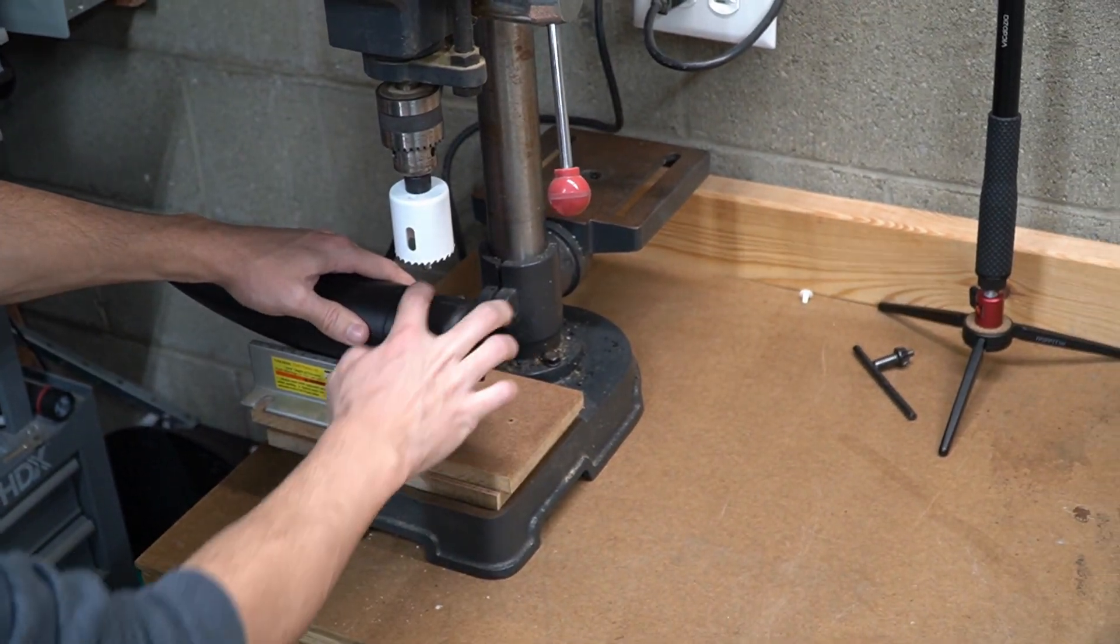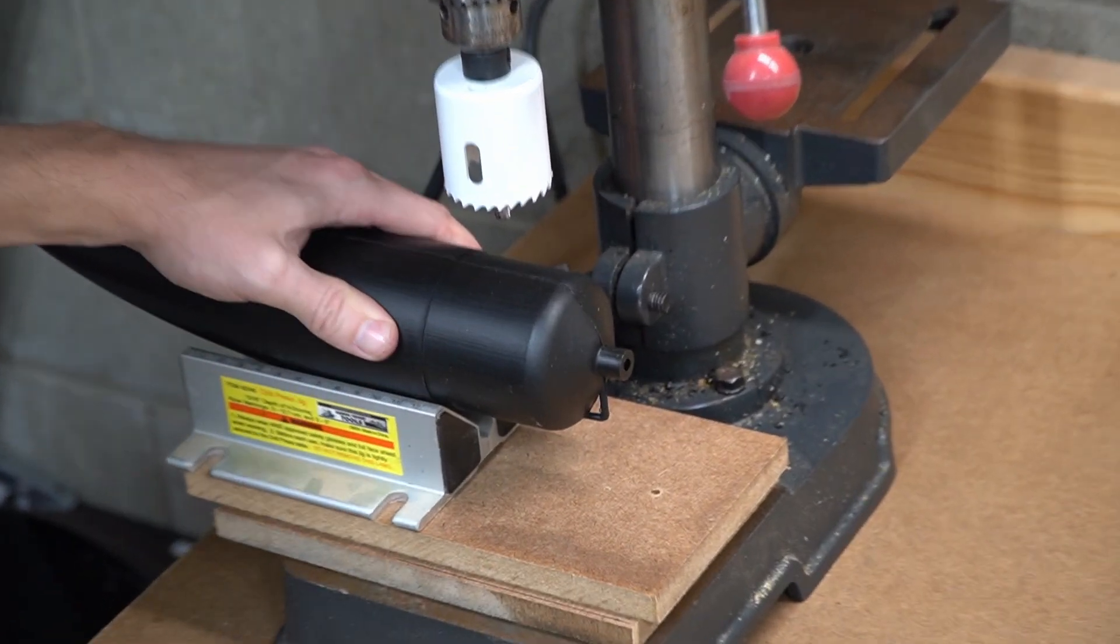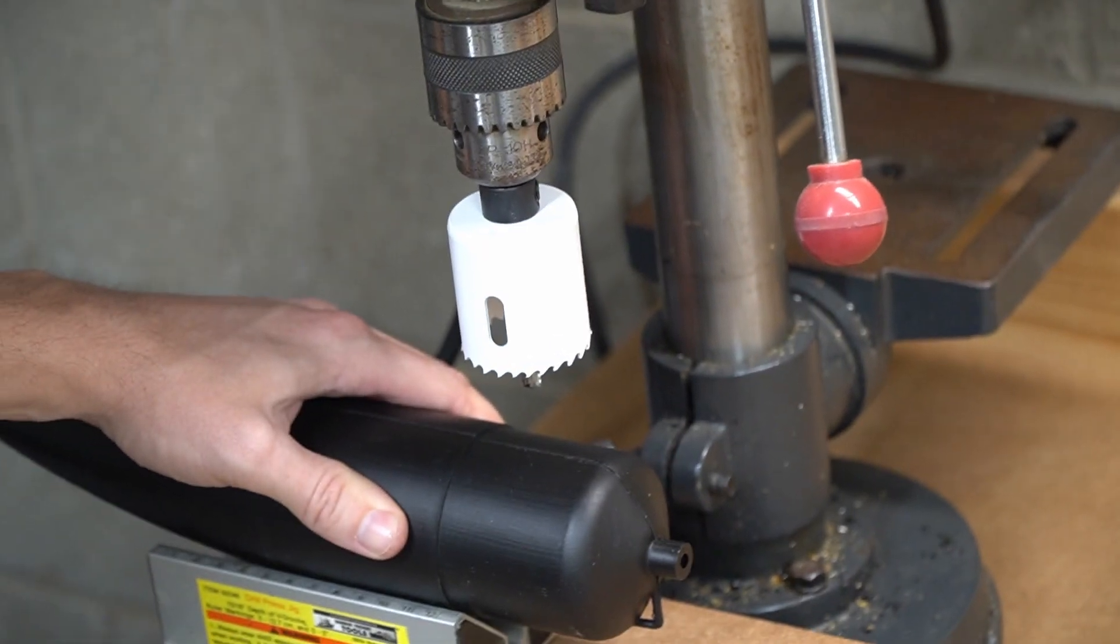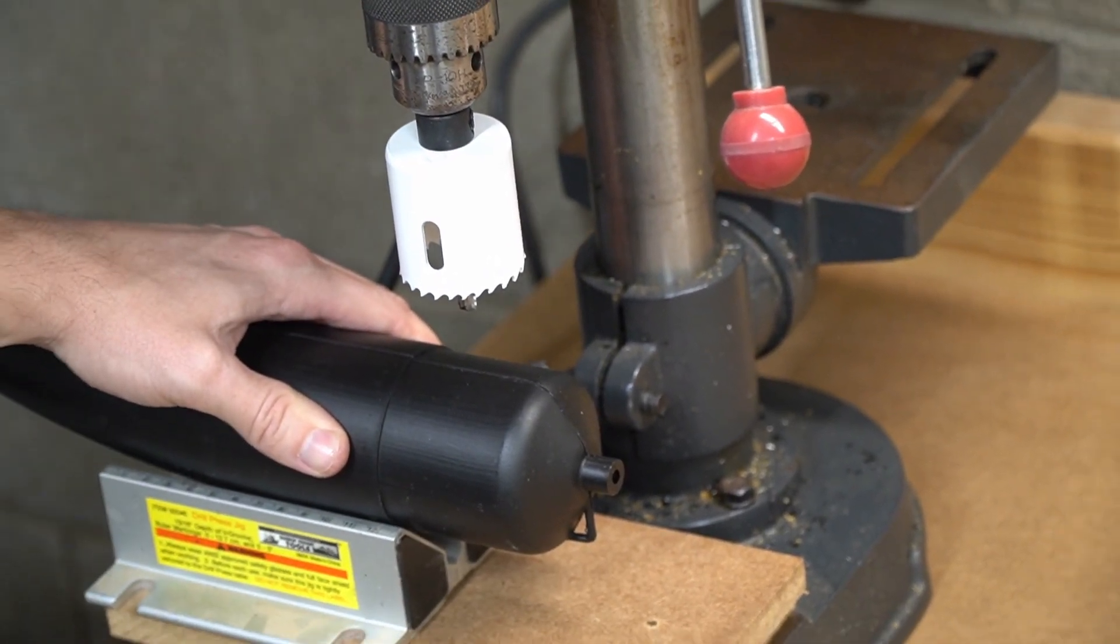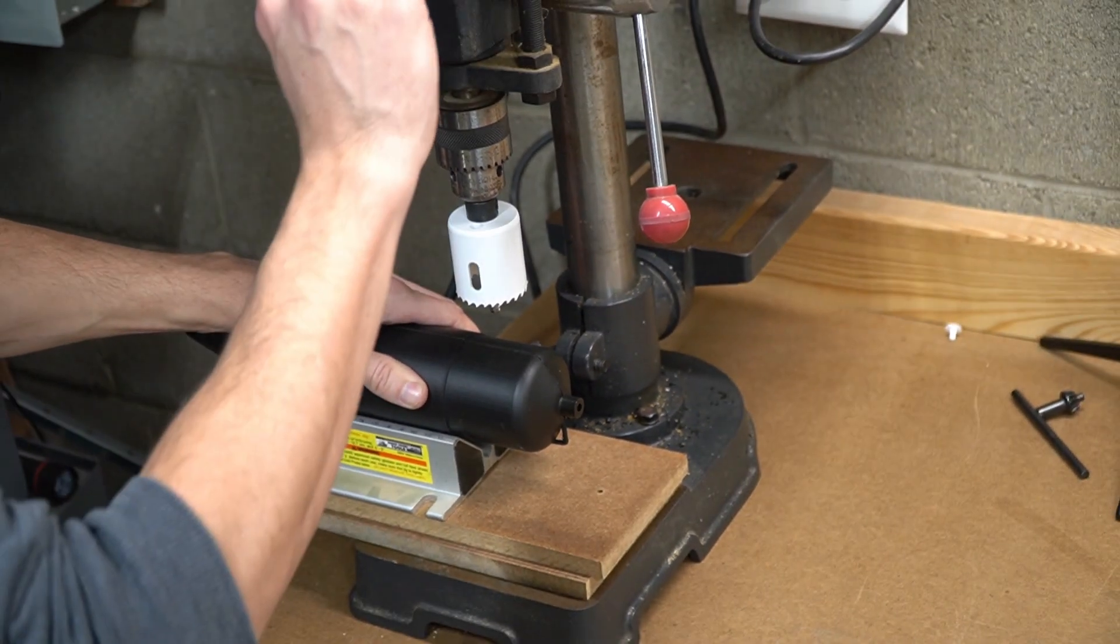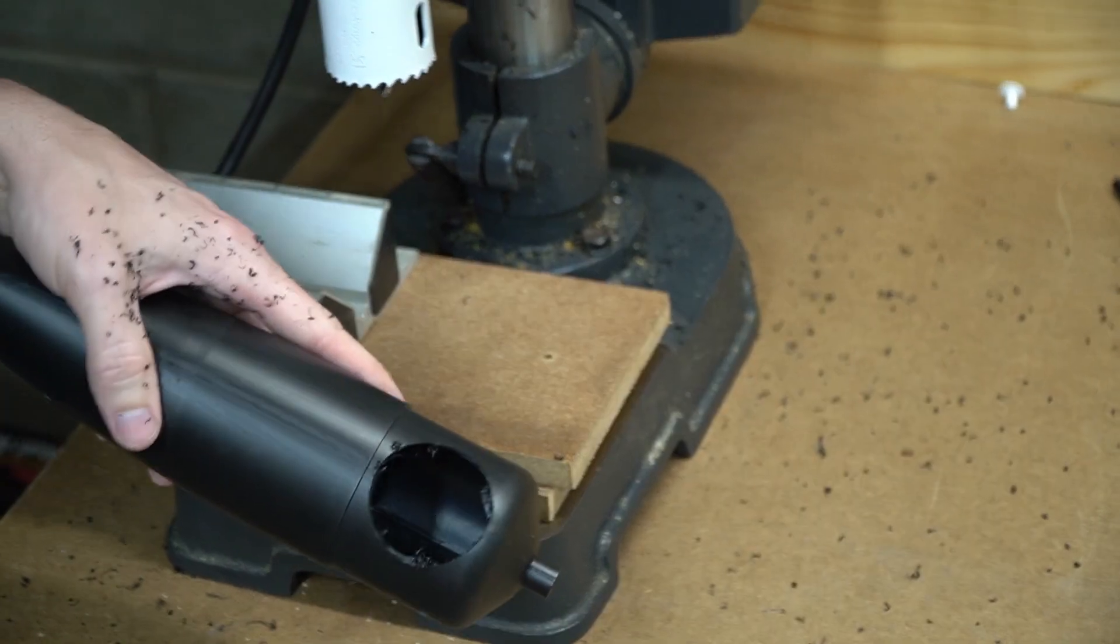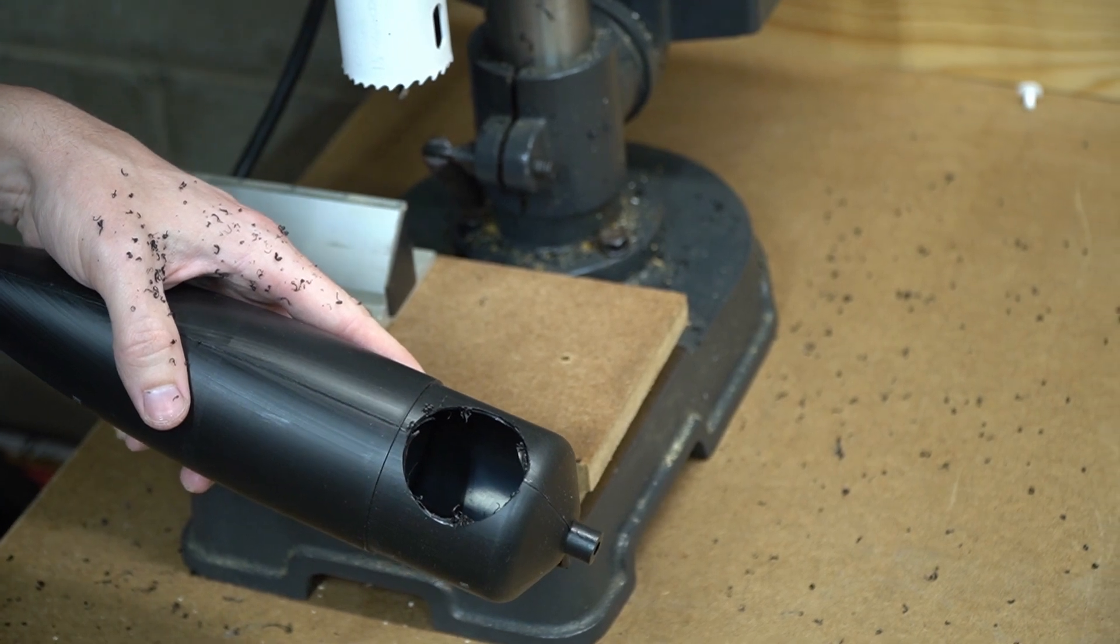Now I'm going to open up a 1 and 3/4 inch access hole for the electronics payload in the nose cone. I'm going to use a 1 and 3/4 inch hole saw for this. I'll just clean that up with the utility knife.